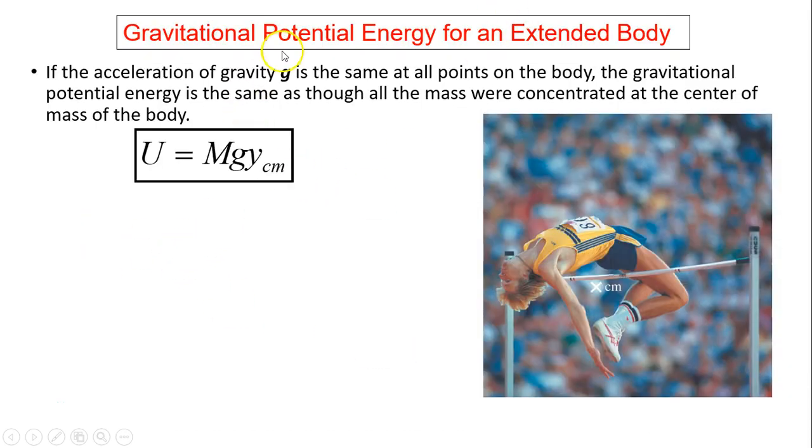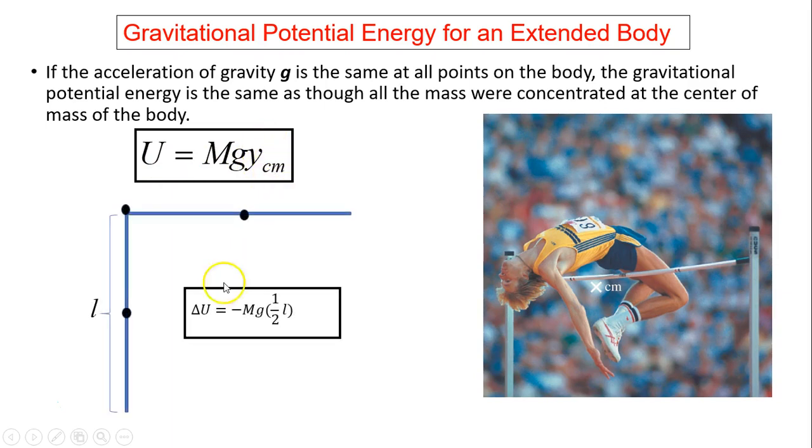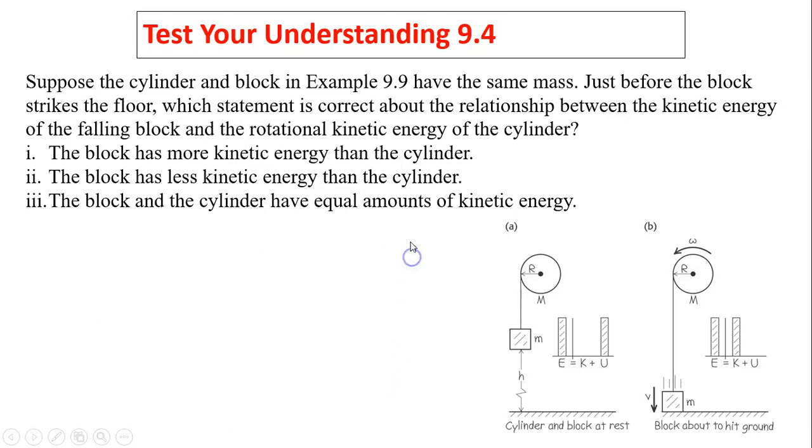Next concept is gravitational potential energy of an extended body. In this case, gravitational potential energy is MGH. This is the center of mass. For example, if you have a bar and you release it, what is the change in potential energy? Change in potential energy equals MGH times 1/2 of L because the center of mass has fallen half the length.